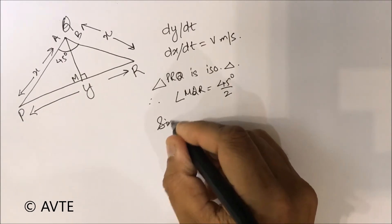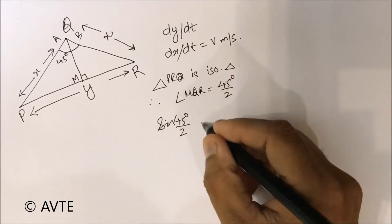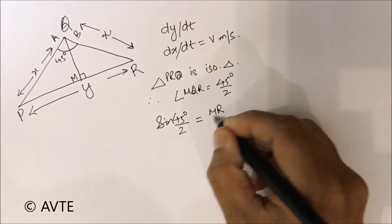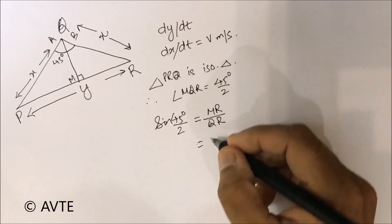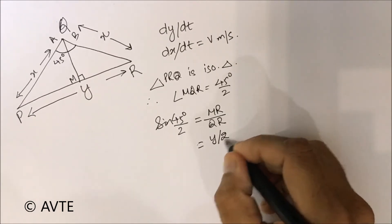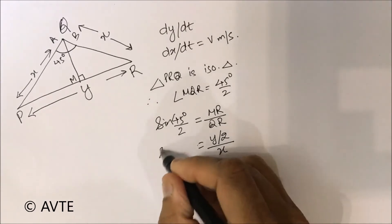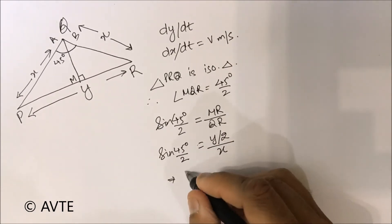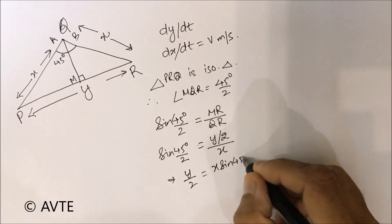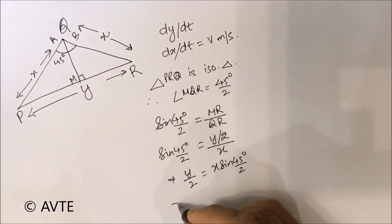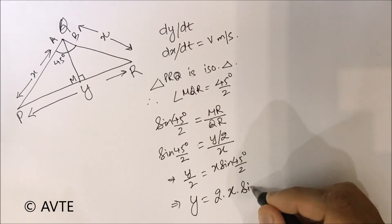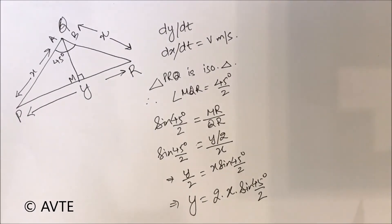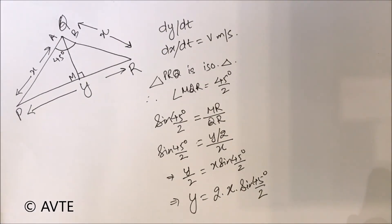In triangle MRQ, sin(45/2°) = MR / QR. MR is simply Y/2 and QR is X. This gives us the important equation: Y = 2X · sin(45/2°).